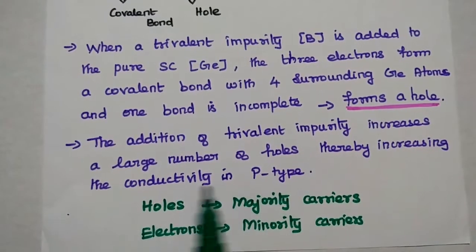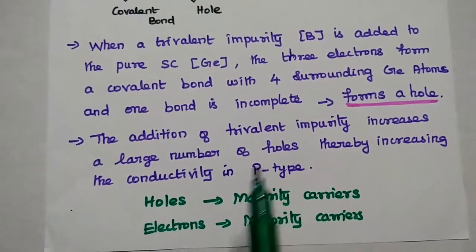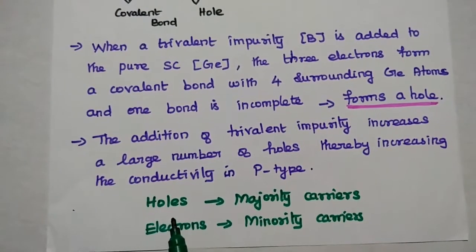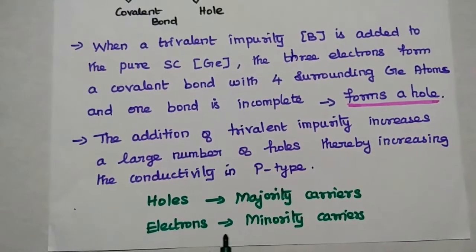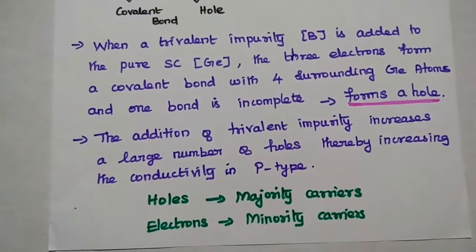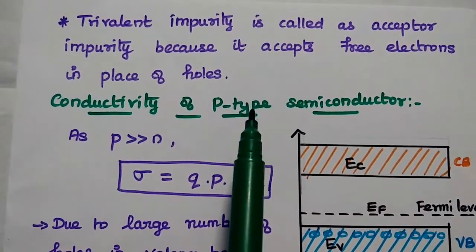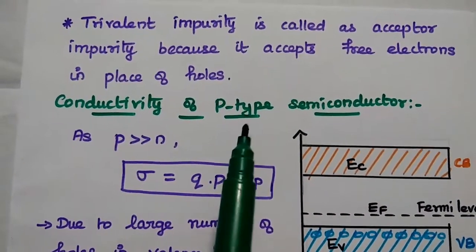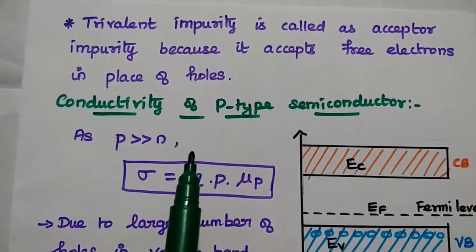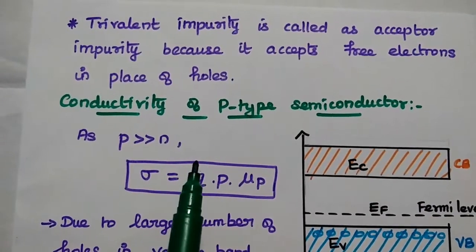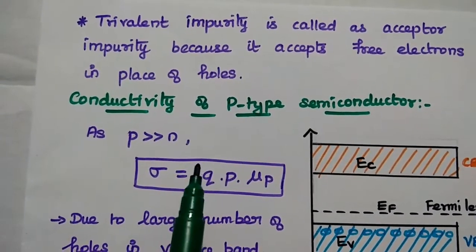In P-type, the conductivity is based on the number of holes. The majority carriers are holes and minority carriers are electrons. The trivalent impurity is called an acceptor because it accepts free electrons in place of holes.